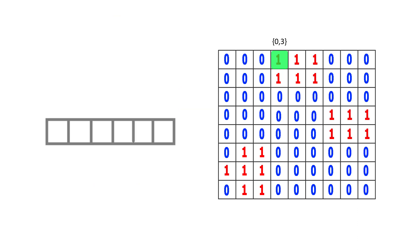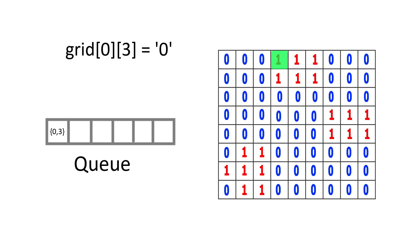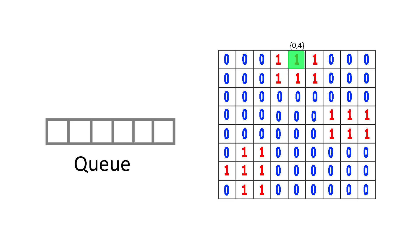We see the first 1 at coordinate (0,3) and push it to the queue. Then we assign it to 0 so we don't check it again. We then explore its neighborhood coordinates — first popping from the queue to get X and Y, then checking the right neighbor at (0,4) and pushing that coordinate into the queue. We continue exploring all connected 1s like this.